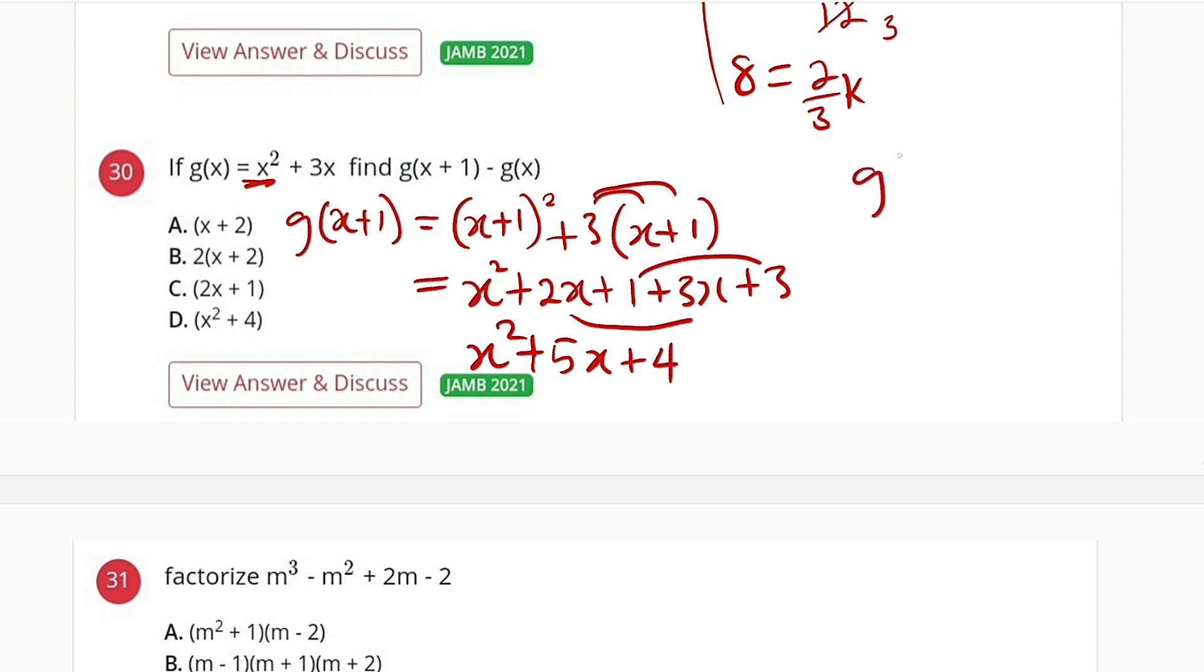And finally, g of x plus 1 then minus g of x. It means we should take the whole of this and subtract what is given here. So this is equal to x squared plus 5x plus 4.